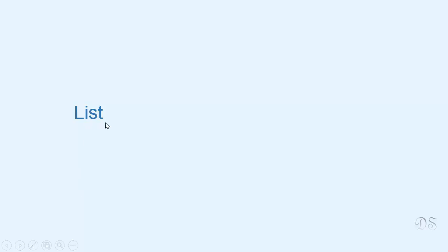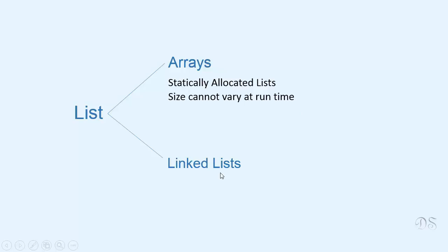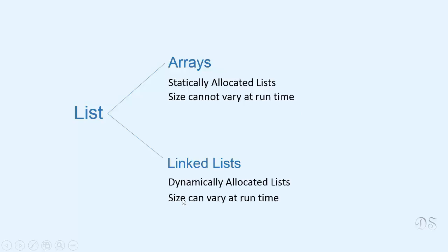We can implement a list in a program using either arrays or linked lists. Arrays are statically allocated lists, which means that their size is fixed at compile time. We cannot increase or decrease the size of an array at run time. While linked lists are dynamically allocated lists, which means that we can vary the size of a linked list at run time.